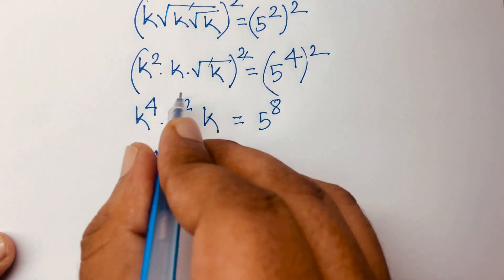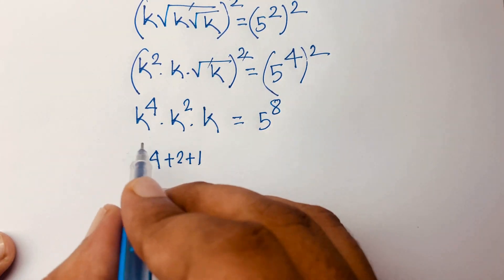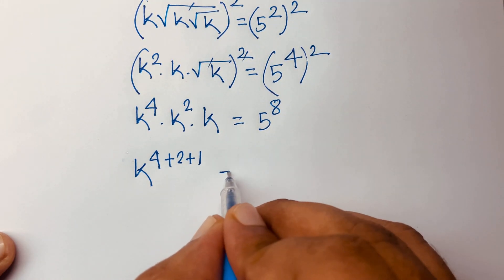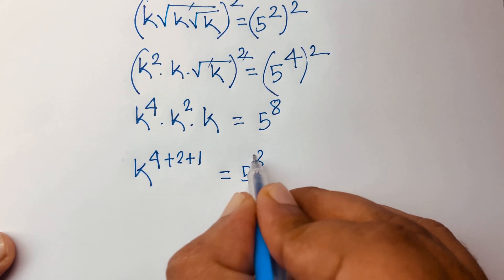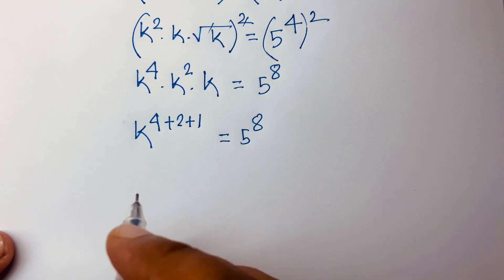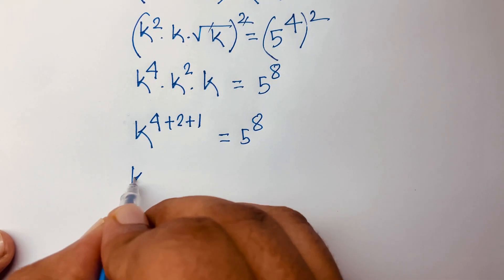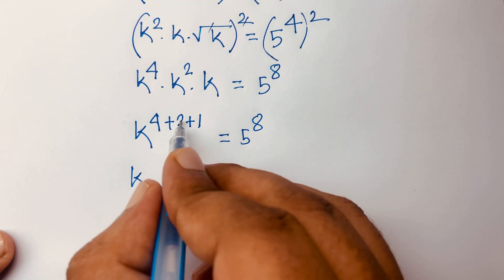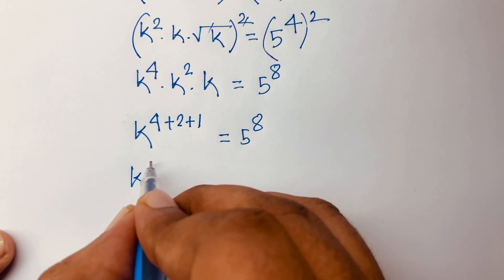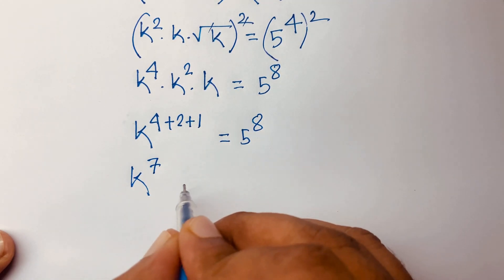According to exponential rules, here is 5 to the power 8. Then k to the power 4 plus 2 plus 1 equals 7, so k to the power 7 = 5 to the power 8.